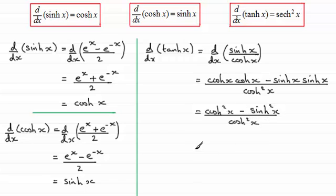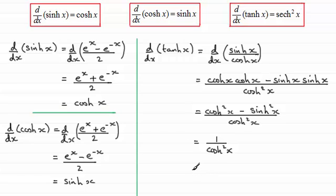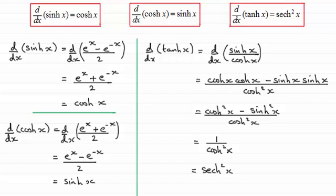Simplifying the top gives us cosh squared x minus sinh squared x, all divided by cosh squared x. You should be familiar with that identity on top — cosh squared x minus sinh squared x is identically equal to 1. So we have 1 divided by cosh squared x. Since 1 divided by cosh(x) is sech(x), we get sech squared x. So those are three simple results that you should be able to derive, though I'd again encourage you to remember them. In later videos we'll use these results for more complex differentiation.